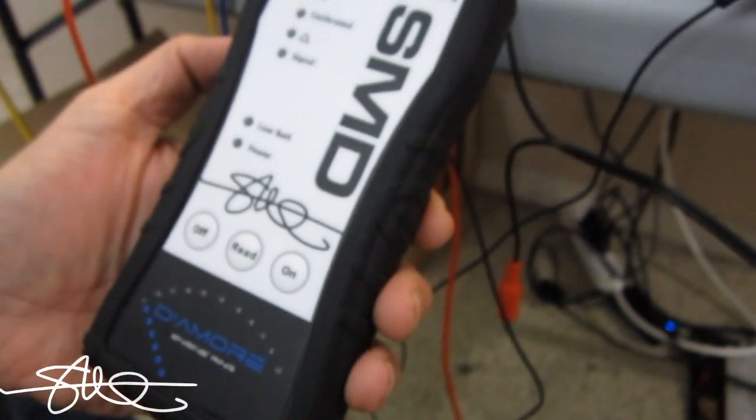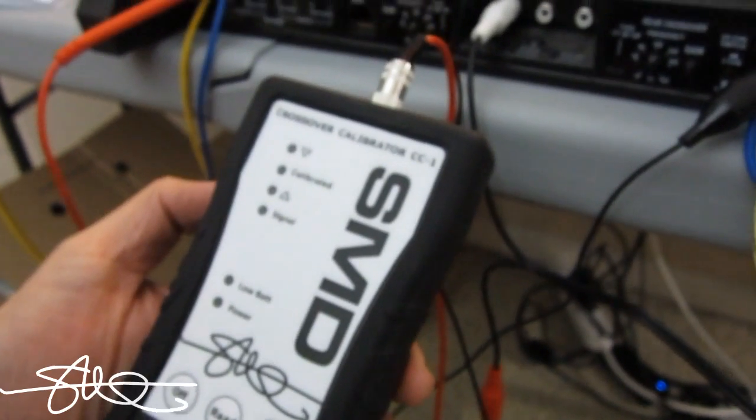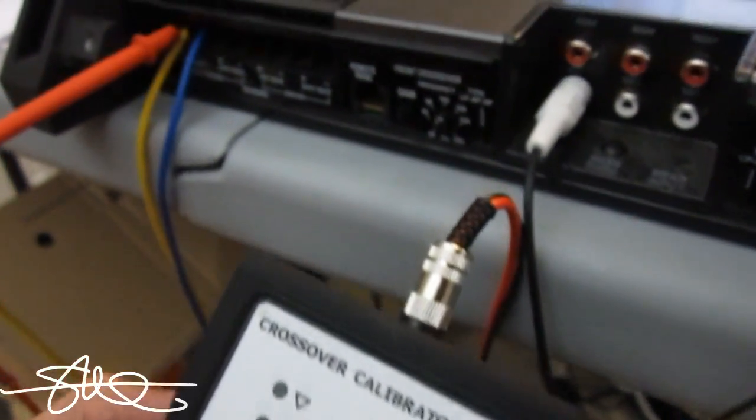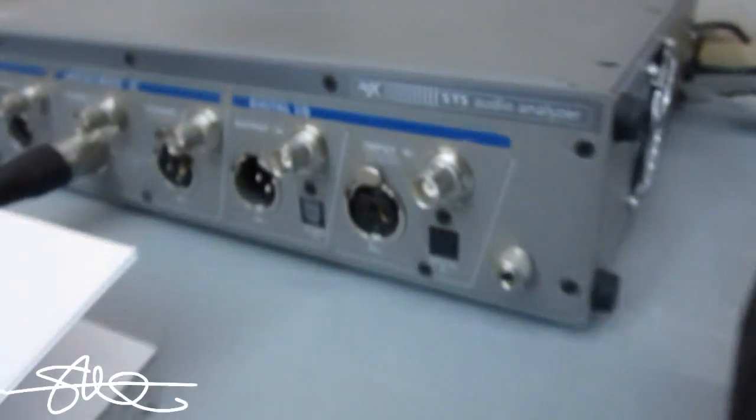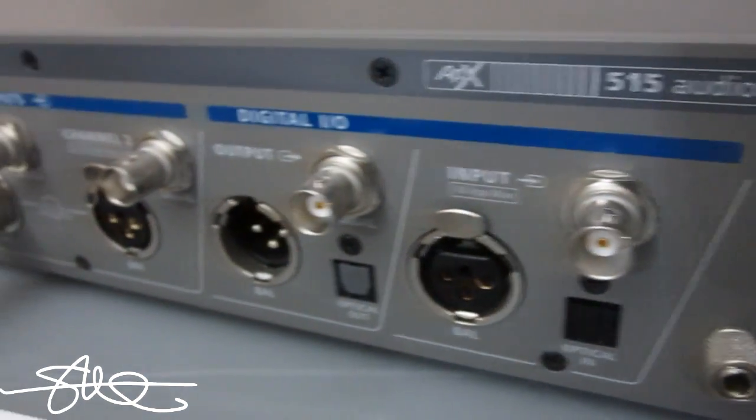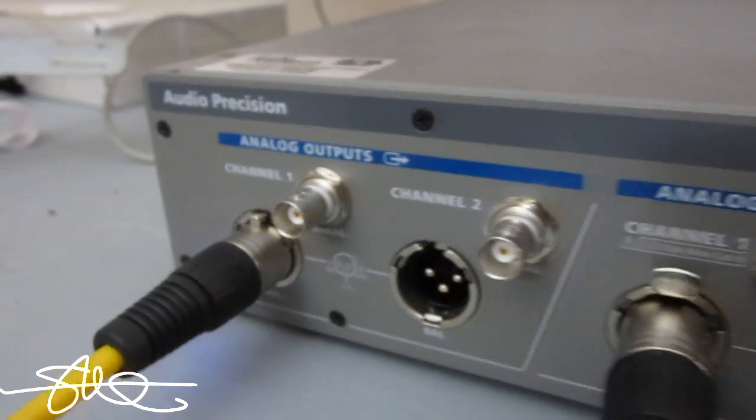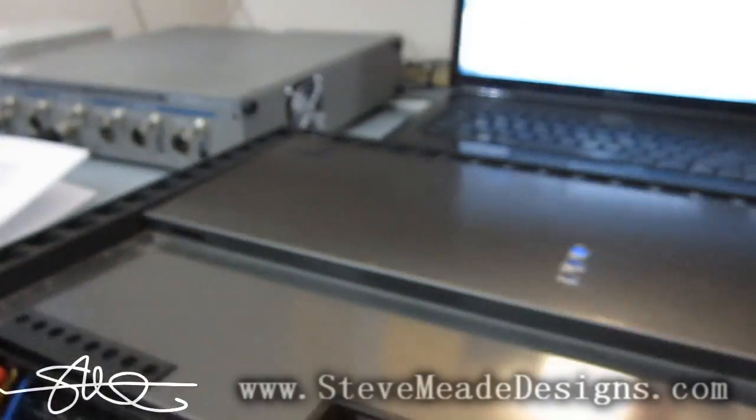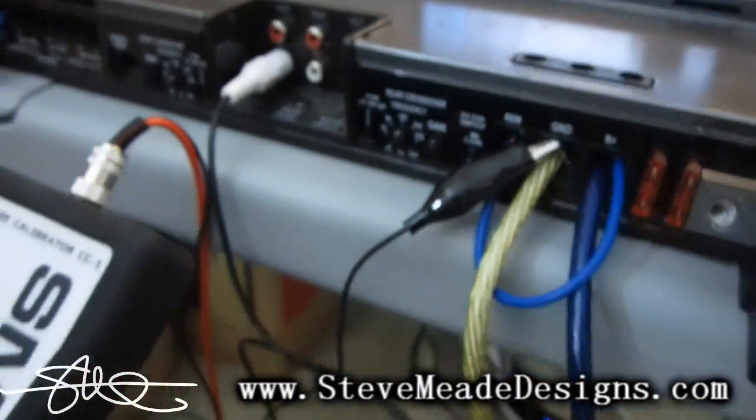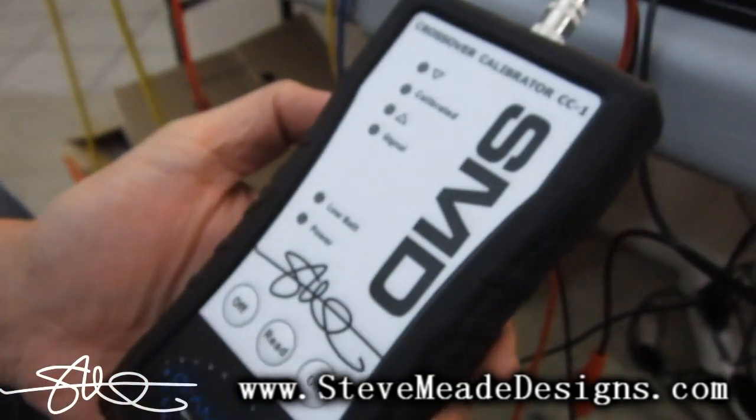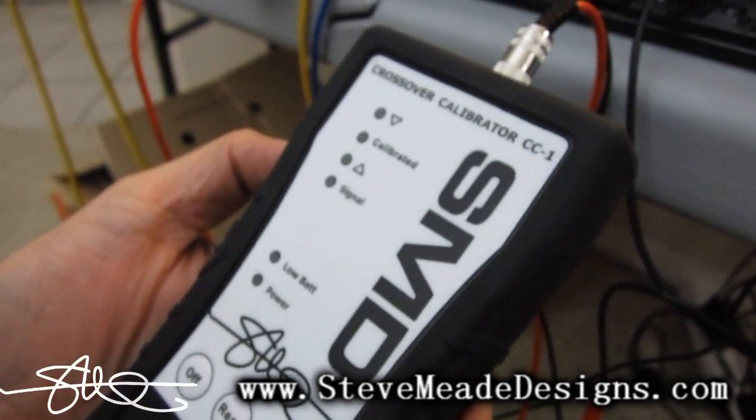We're going to test it, test its accuracy, prove its accuracy. We're going to test it against this Audio Precision APX515. This is a very expensive, accurate piece of equipment. And we're going to show how close the CC1 is or how it compares.